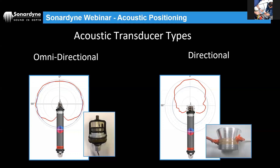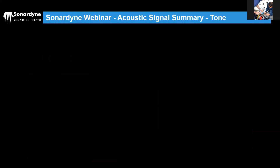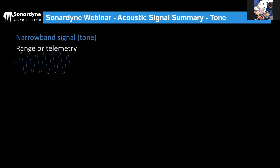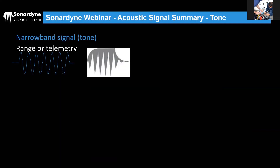Now let's look at the acoustic signals themselves. Sonar has existed since the early 20th century, originally using analog, narrow-band, tone-based signals. Applied to acoustic positioning — sending interrogations, getting responses, and measuring time of flight for LBL or USBL — you could get either range responses or telemetry data. Telemetry was done in analog mode using frequency modulation: a two-tone signal encoding ones and zeros. I'm going to play some audio now — it's high-pitched, so be prepared.